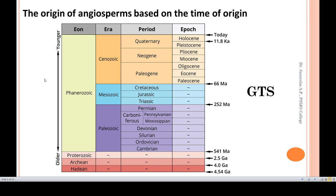Now, the Paleozoic era is divided into: Cambrian, Ordovician, Silurian, Devonian, Carboniferous, and Permian. The Mesozoic era includes Triassic, Jurassic, and Cretaceous. The Cenozoic era includes Paleogene, Neogene, and Quaternary.